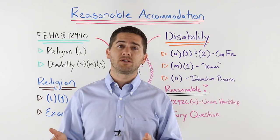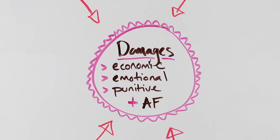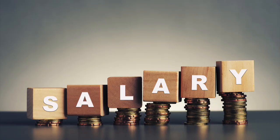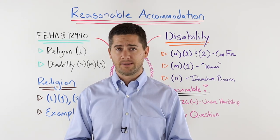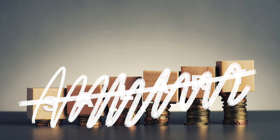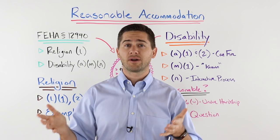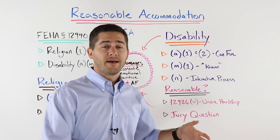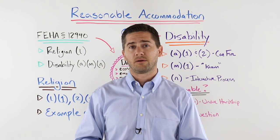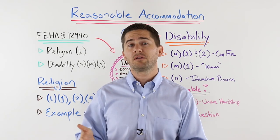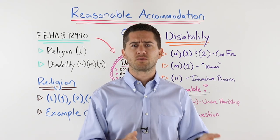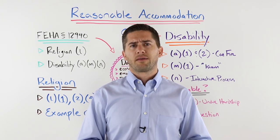If you request an accommodation, are denied, and are fired, what financial remedies are available? First, you can win your economic damages. If you were making $100,000 a year, became disabled, requested an accommodation, and they fired you — you're no longer making $100,000 a year. That's a very tangible economic loss a jury can measure. Similarly, if you're fired due to your religious beliefs or because you're disabled, that has a devastating emotional impact. We call those emotional distress damages, which are often the largest component of these cases — damages for the pain and suffering of being discriminated against.